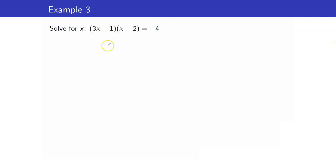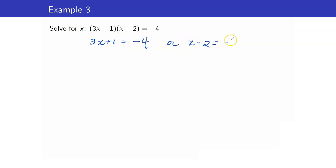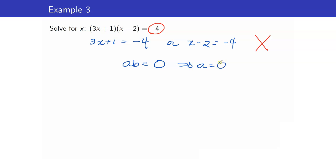For our next example, we have (3x plus 1)(x minus 2) equals negative 4. This is already in factored form, but can we set each factor equal to negative 4? No, we cannot do that because this side is not equal to zero. Remember the zero product property — the product must equal zero before we can equate each factor to zero.